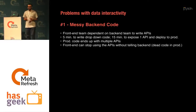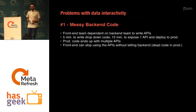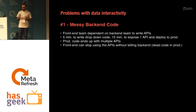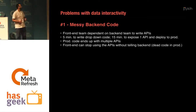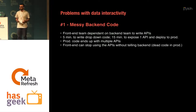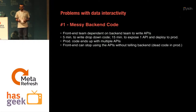The first big problem with data interactivity is that your back-end code is extremely messy. For every drop-down you need to render, you need to write an API. It takes five minutes to write a drop-down, fifteen minutes to write an API and publish that code to production. You might remove that drop-down in the front-end, but that API might remain at the back-end — so you end up with dead code.